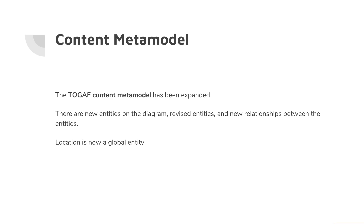The fourth thing is the content meta model. The TOGAF standard has a diagram that defines the content meta model — how all the documents, processes, and things relate to each other within the architecture repository. Because we're adding new artifacts into Phase A and Phase B and splitting up elements that were treated as one in TOGAF 9.1, there are additional changes to the content meta model: new entities on the diagram, revisions of existing entities, and new relationships. For instance, location has been pulled out into what's called a global entity.